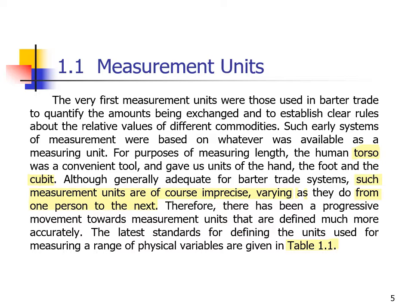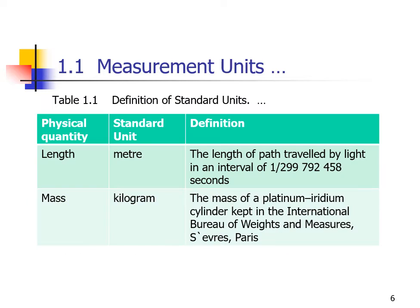In Table 1.1 we have been given certain measurement units. First, we have the standard unit for length, which is the path travelled by light in an interval of 1/299,792,458 seconds. These units are defined systematically.